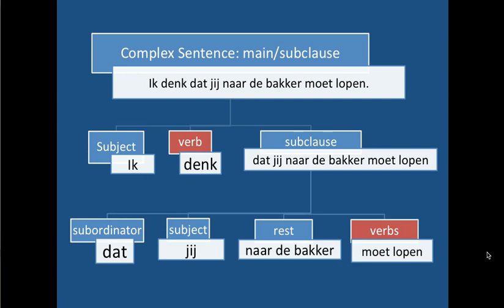Here is a complex sentence of the structure main clause, subclause: 'Ik denk dat jij naar de bakker moet lopen.' The subject is 'ik,' the verb 'denk' is in second place, and then the rest is taken on by a subclause: 'dat jij naar de bakker moet lopen.' The trigger of the subclause here is 'dat' — the word 'dat' is therefore the subordinator. Then you get the subject 'jij' and the rest, and the verb is kicked towards the end of the subclause. So you see two positions of the verb: here in second place for the main clause, and in the subclause at the very end — there are even two verbs there, and both occur at the end. Nothing happening in the middle. All the verbs hop to the end.